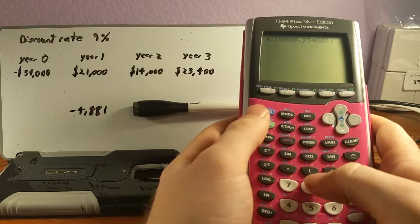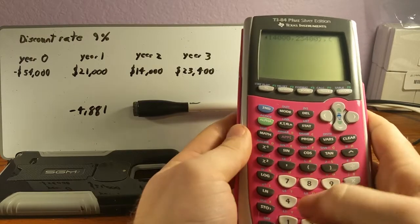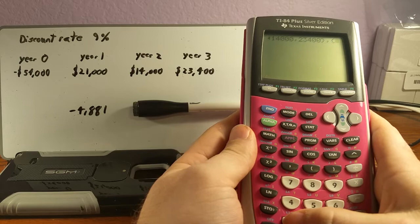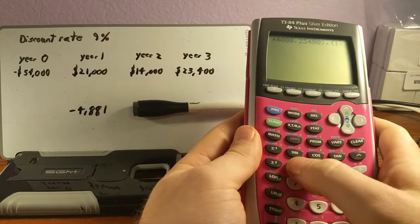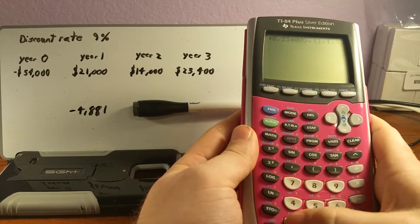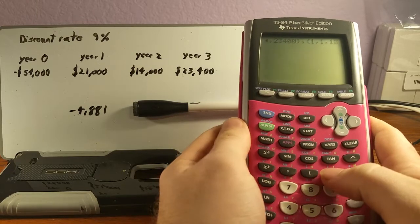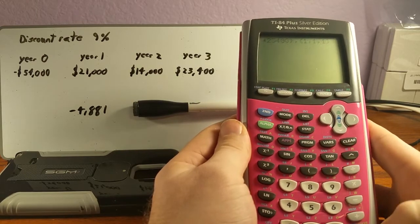Separate that by a comma. And then once again, we're going to do our curly braces and put in a one for each corresponding year: year one, year two, and year three, of course, all separated by commas. All right.